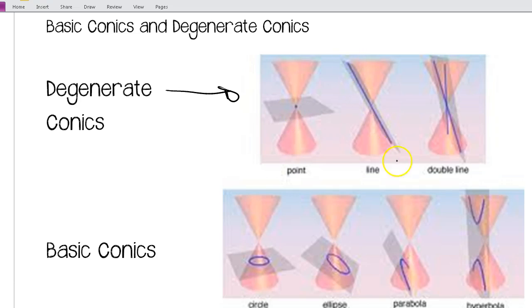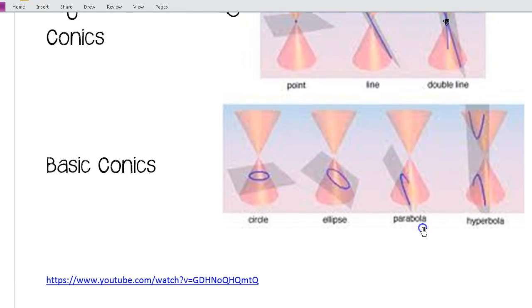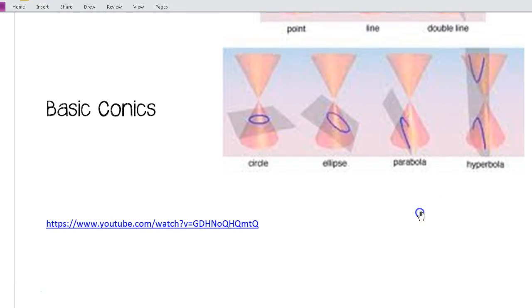If my plane intersects the edge of the two cones, we would end up with a line. And then, if our plane goes through this center point here and goes through both cones, we would get two intersecting lines. So, those are degenerate cases. They don't really form a conic. We just call them degenerate conics.